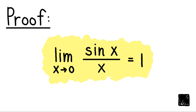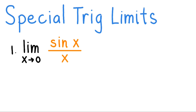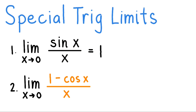To start, take note that the two special trigonometric limits are: first, the limit of sin x over x as x approaches zero is 1; and second, the limit of 1 minus cos x all over x as x approaches zero is 0. These two are useful in determining more complex trig limits later on.